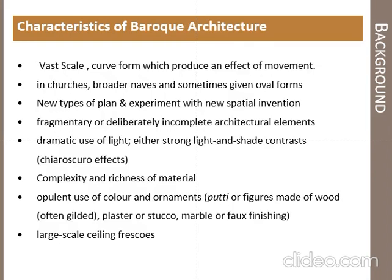Characteristics of Baroque architecture include vast scale, curved forms which produce an effect of movement in churches, broad naves, and sometimes oval forms. The use of oval forms and complex geometry was characteristic of Baroque architecture. New types of plans and experiments with new spatial inventions were made. Simple geometries were used to invent new, complex geometrical forms.